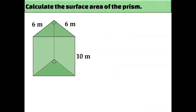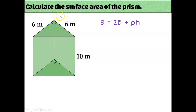Now let's try the same thing but for a triangular prism instead of a rectangular prism. Either way, it's still a prism, so I'm going to use the same formula: S = 2B + PH. The bases for this one are the two right triangles because they are congruent and parallel, so I need to find the area of this right triangle.